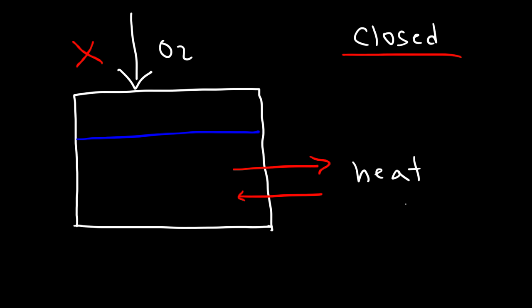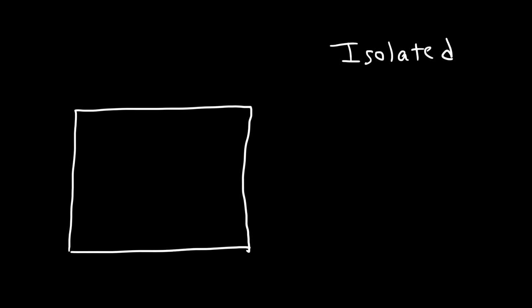Now in an isolated system, we have a closed container that is very well insulated. So like a closed system, matter cannot enter and matter cannot leave. Water cannot escape out of this closed system. And this time, heat energy cannot escape either, and heat energy cannot enter. So it's extremely well insulated. In an isolated system, nothing can enter and nothing can leave.